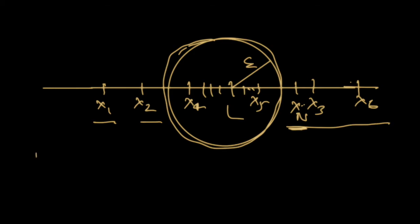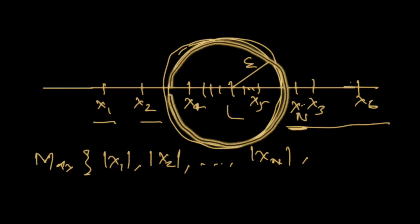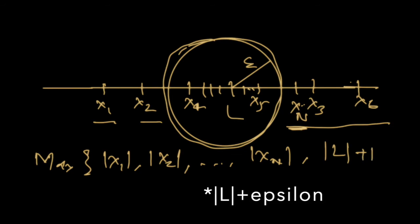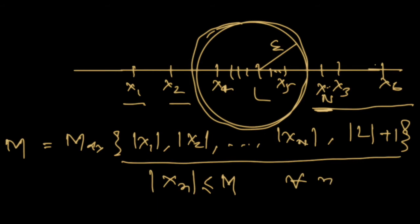If we take the maximum of |x1|, |x2|, up to |x_N|, and for all the infinitely many remaining elements we use |L| + 1, then taking M as the maximum of these gives us a bound. We can see that all terms will be bounded by this number M for all n. That is the idea of the proof.